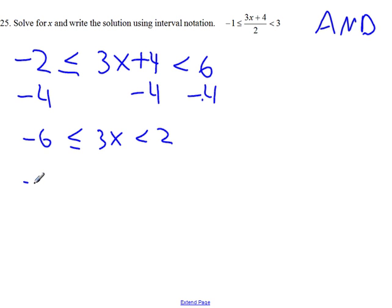So we'll have negative 2 less than or equal to x less than 2 thirds. We're done solving. We have to write the solution using interval notation.